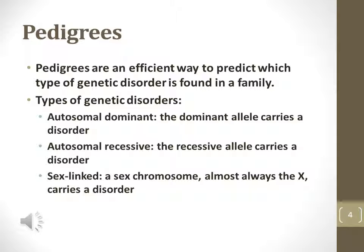Pedigrees map the patterns of genetic disorders, so analyzing several generations can use laws of genetics to determine the probability of a genetic disorder in an offspring. Genetic disorders can be autosomal dominant, autosomal recessive, or sex-linked, which means the locus is located on the X chromosome.